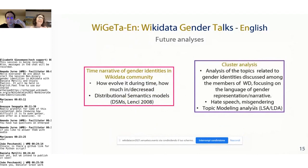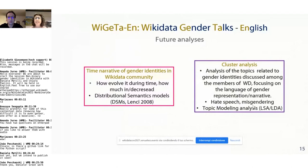Our analysis aims to create a time narrative of gender identities in the Wikidata community — how the narrative of gender identities evolved over time, using distributional semantics models. We also plan a cluster analysis about gender identities discussed among Wikidata members, focusing on how language is used in the gender representation narrative, and — in future work — analyzing cases of hate speech and misgendering using topic modeling analysis.